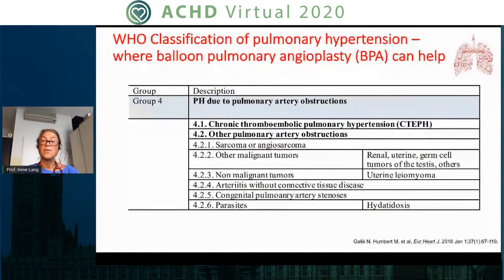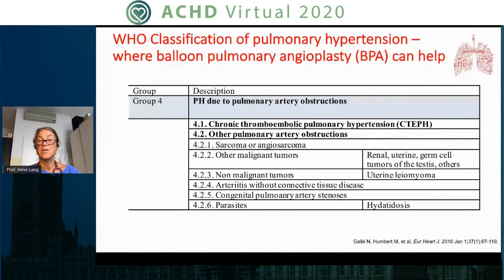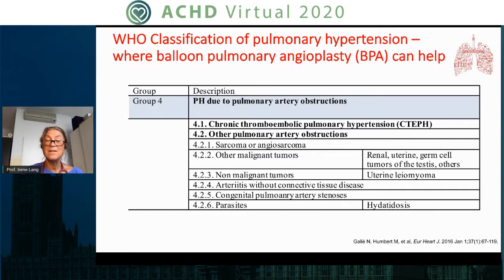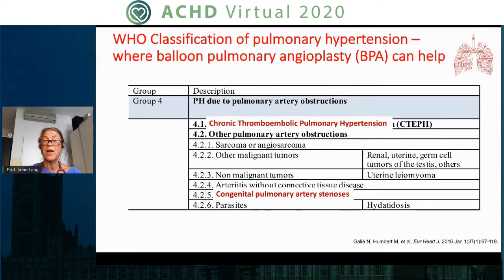The WHO classification of pulmonary hypertension has in Group 4 the conditions of pulmonary hypertension due to pulmonary artery obstructions. It encompasses a number of different conditions, the main one being chronic thromboembolic pulmonary hypertension, but there are also other obstructions, and as you go down the list there is also congenital pulmonary artery stenosis. What is not here but will be included at the next revision is peripheral pulmonary stenosis, which is an Asian condition but I've also seen it in Europe.